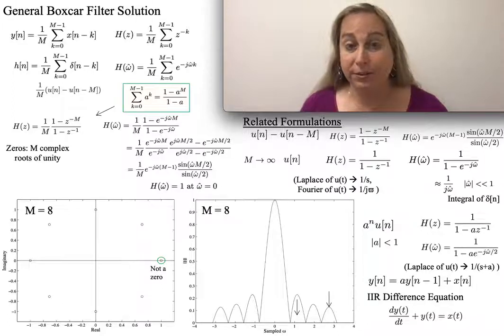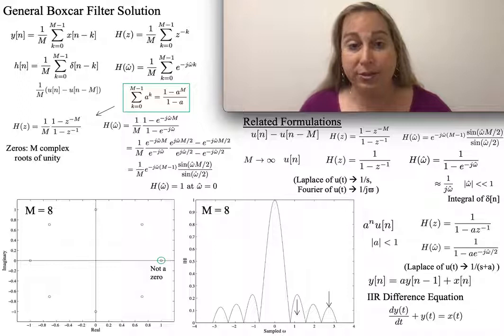I'd like to talk about the boxcar filter, how we solve it, how we think about it, and work through this conversation. I want to do this from a discrete time perspective, although there will be some continuous pieces that come in because there are some very nice connections.